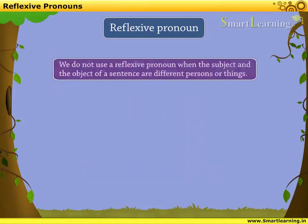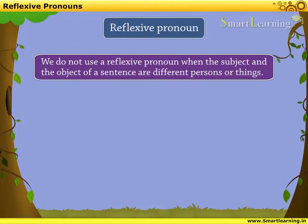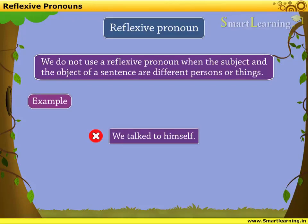Note that we do not use a reflexive pronoun when the subject and the object of a sentence are different persons or things. For example, we do not say 'we talked to himself.' We say 'we talked to him' instead.